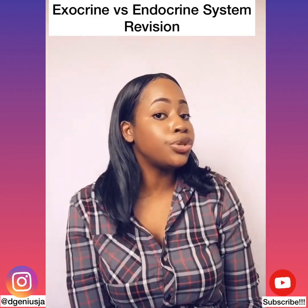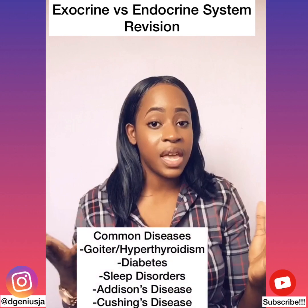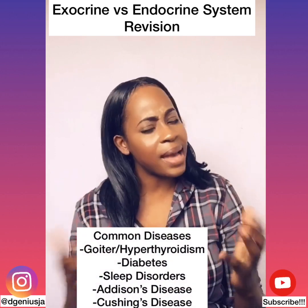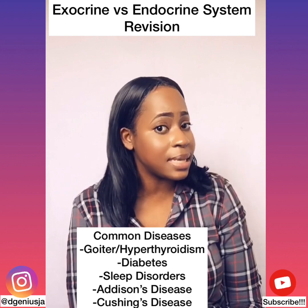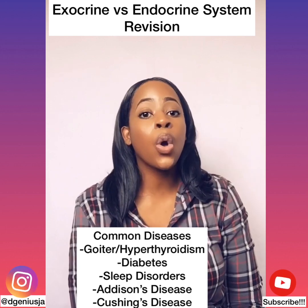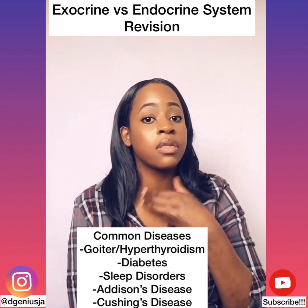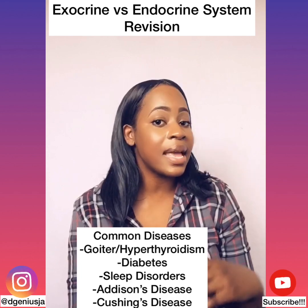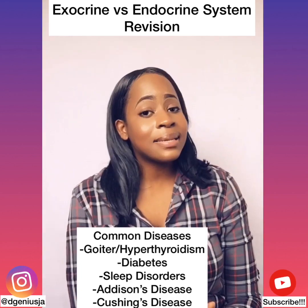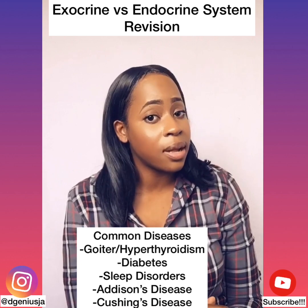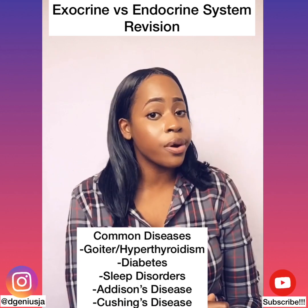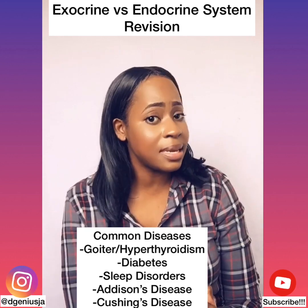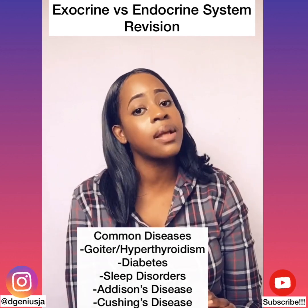It's also important to note that whenever we have deviations occurring in these endocrine glands, we might have the development of some diseases. For example, goiter in the case of the thyroid gland, diabetes in the case of the pancreas, Addison's disease in the case of the adrenal glands, sleep disorders in the case of the pineal gland, and Cushing's disease in the case of the pituitary gland.